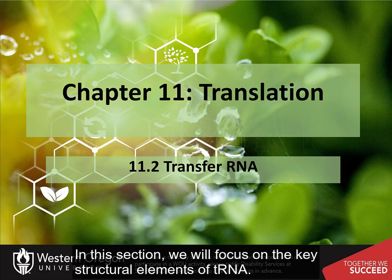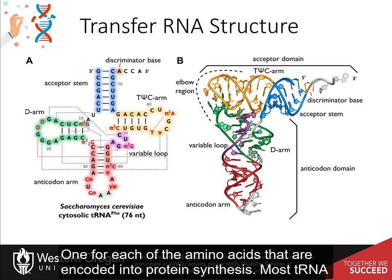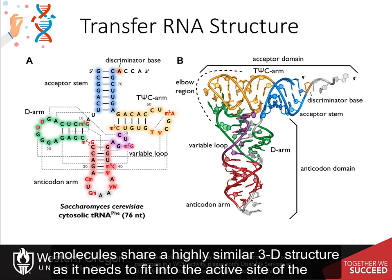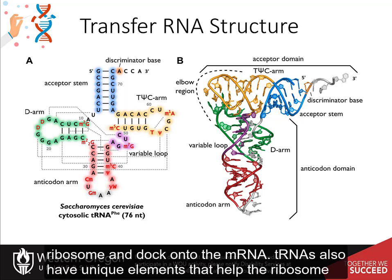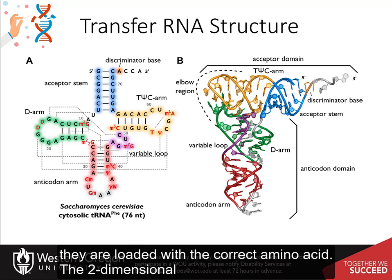In this section, we will focus on the key structural elements of transfer RNA. There are 20 key tRNA molecules within the body, one for each of the amino acids that are encoded into protein synthesis. Most transfer RNA molecules share a highly similar 3D structure, as they need to fit into the active site of the ribosome and dock onto the messenger RNA. Transfer RNAs also have unique elements that help the ribosome and the transfer RNA synthetase enzymes to distinguish between them, ensuring that they are loaded with the correct amino acid.